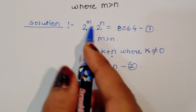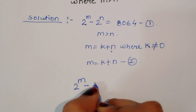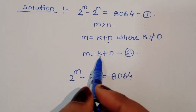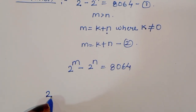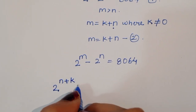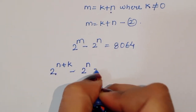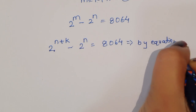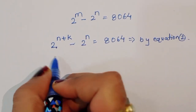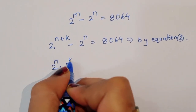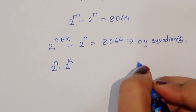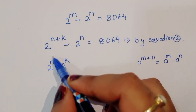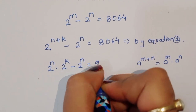Now we write the first equation: 2 power m minus 2 power n is equal to 8064. Since m is equal to k plus n, we substitute to get 2 power (n plus k) minus 2 power n equals 8064. Using the formula a power (m plus n) equals a power m times a power n, we rewrite this as 2 power n times 2 power k minus 2 power n equals 8064.